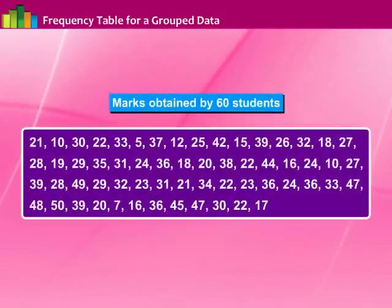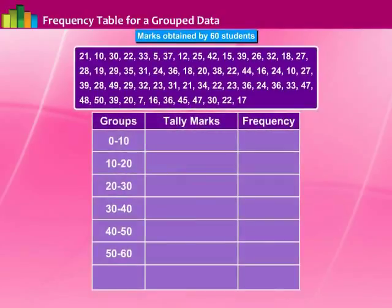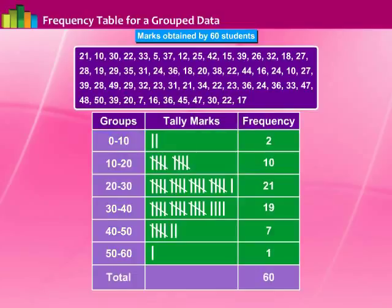Let us learn how to tabulate a frequency table for grouped data with an example. Consider the following marks out of 50 obtained in mathematics by 60 students of class 7. If we make a frequency distribution table for each observation, the table would be too long. So for convenience, we make groups of observations — say 0 to 10, 10 to 20, and so on — and obtain a frequency distribution of the number of observations falling in each group. Mark tally marks for each value beside the class it belongs to. Thus the frequency distribution table for the above data can be as shown.